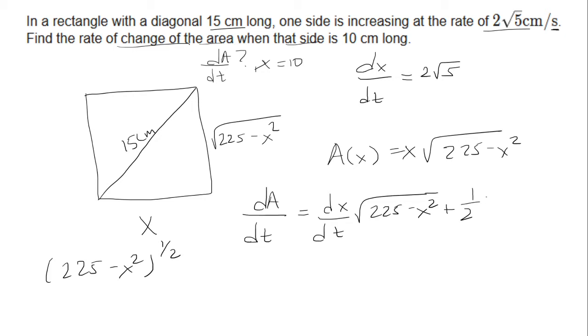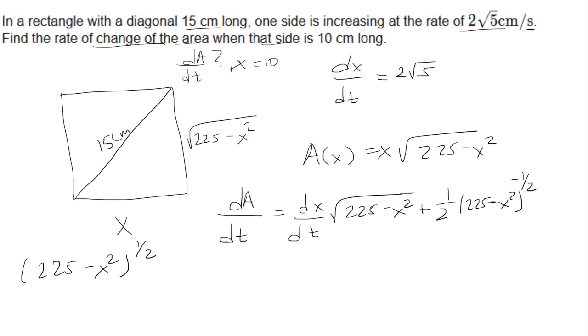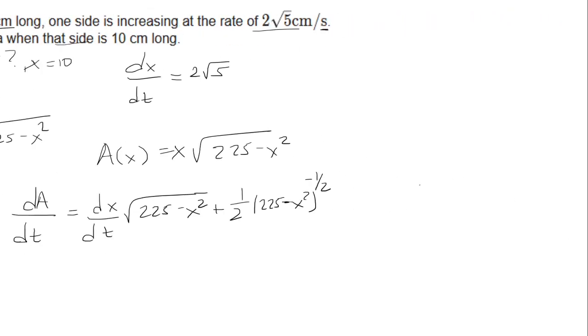Bring down the exponent. Keep the inside the same. Subtract 1 in the exponent, and multiply by the derivative of the inside. So the derivative of 225 minus X squared will be negative 2X, and because we're taking the derivative with respect to T, we also need dX over dT.